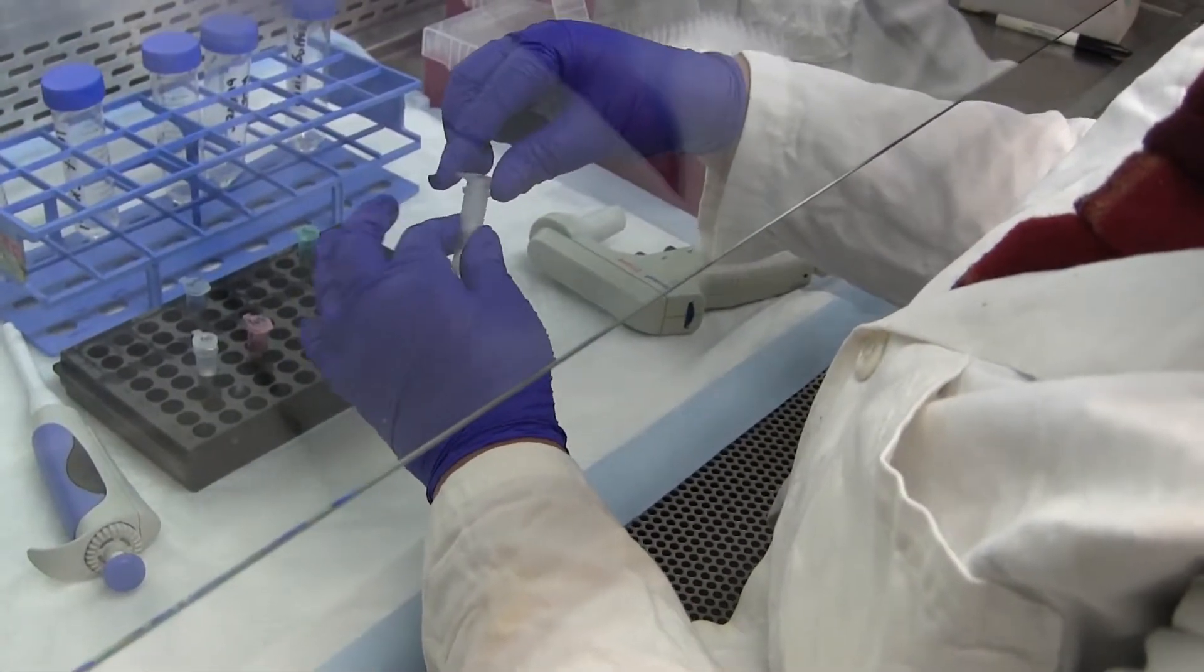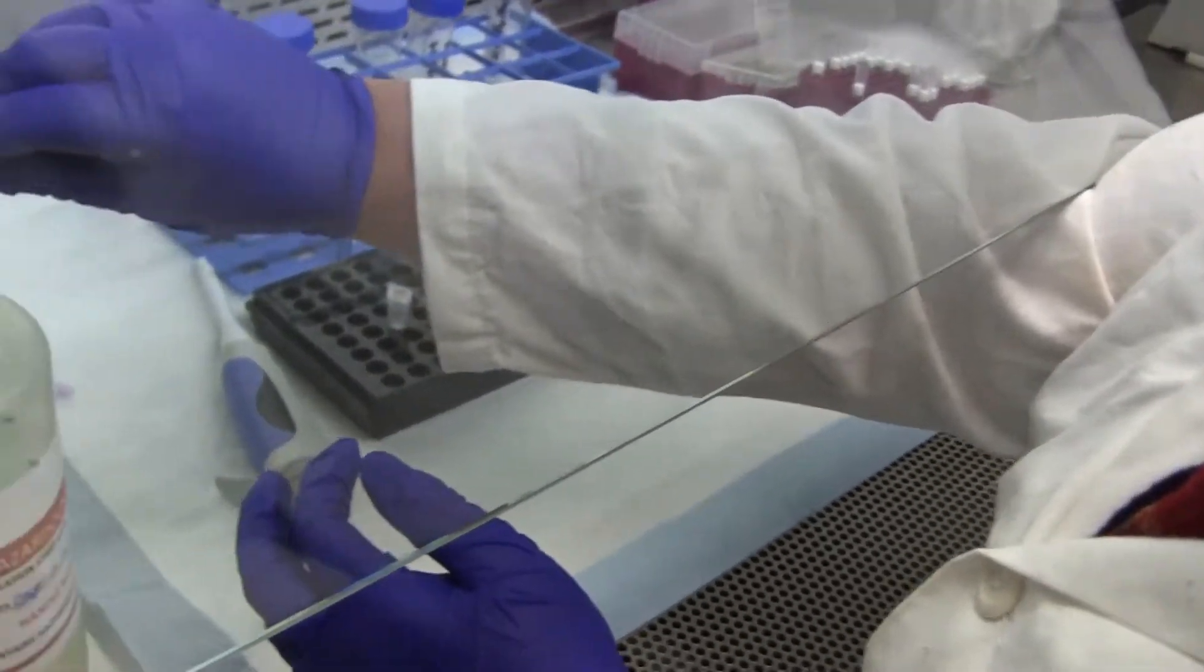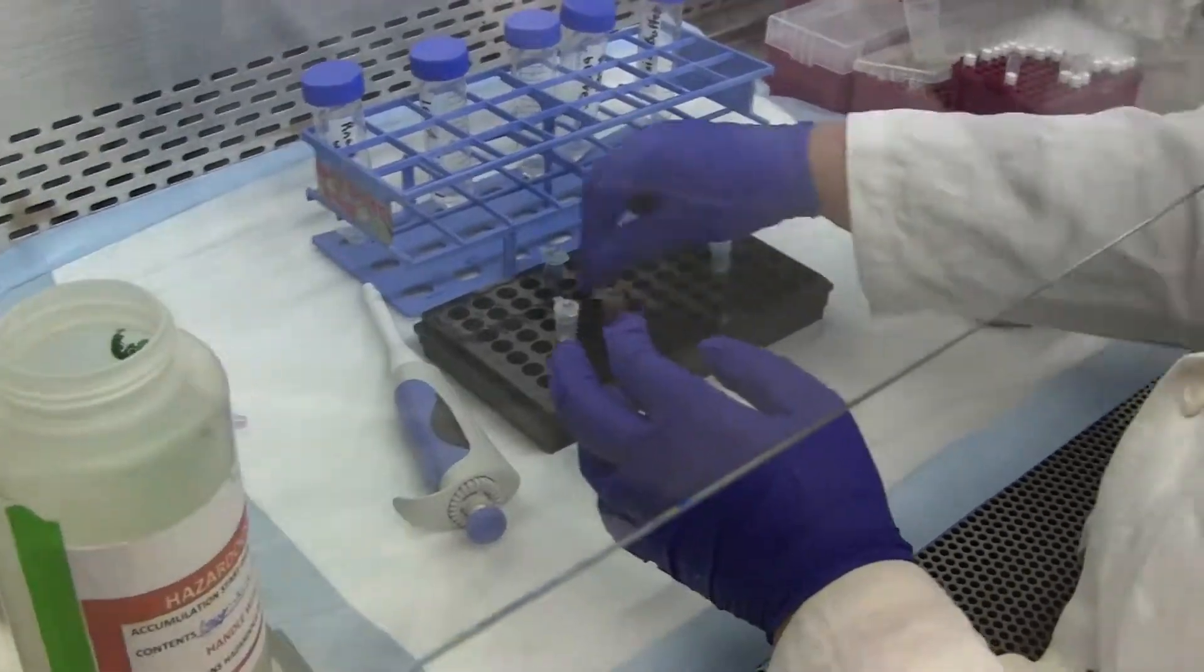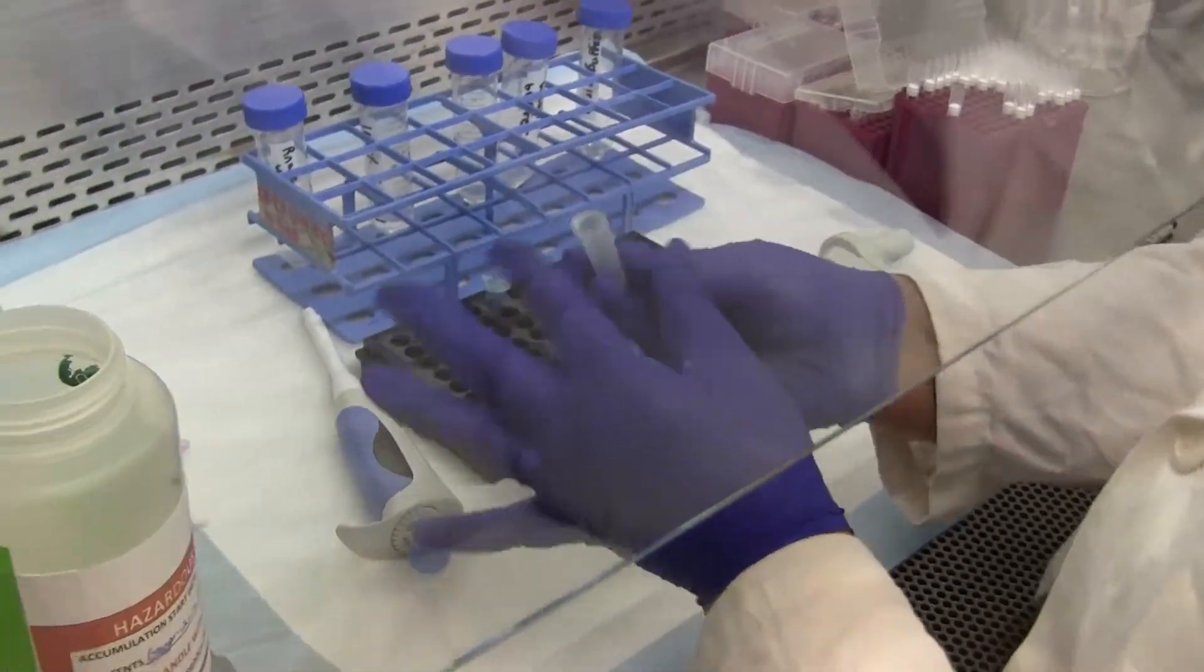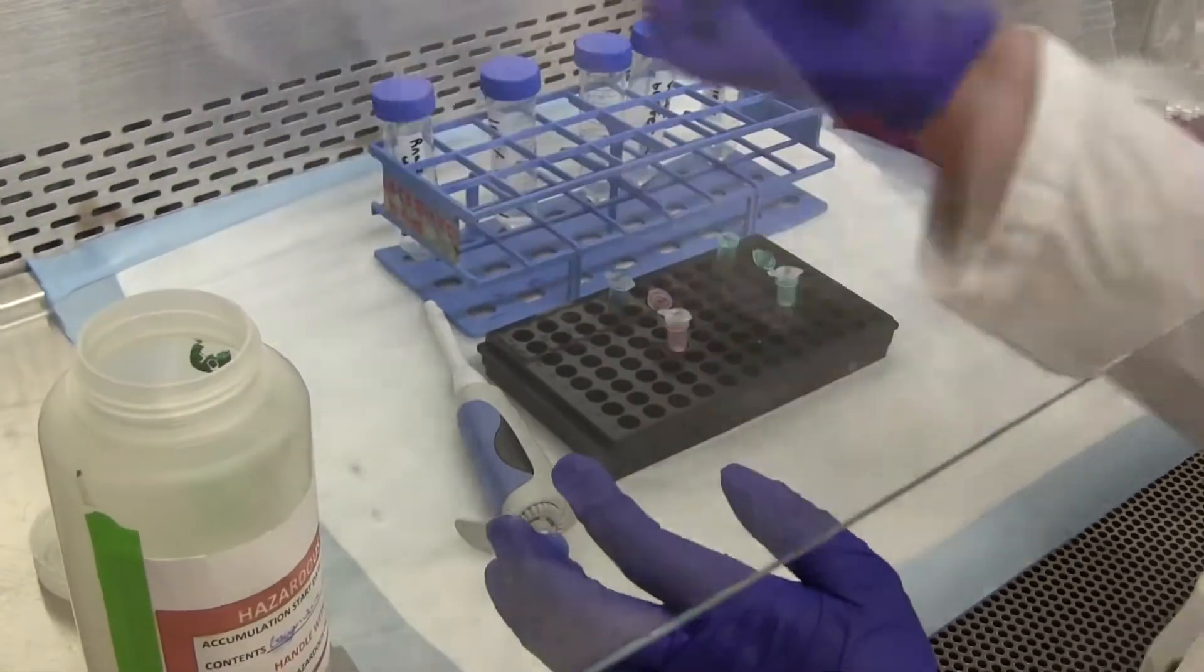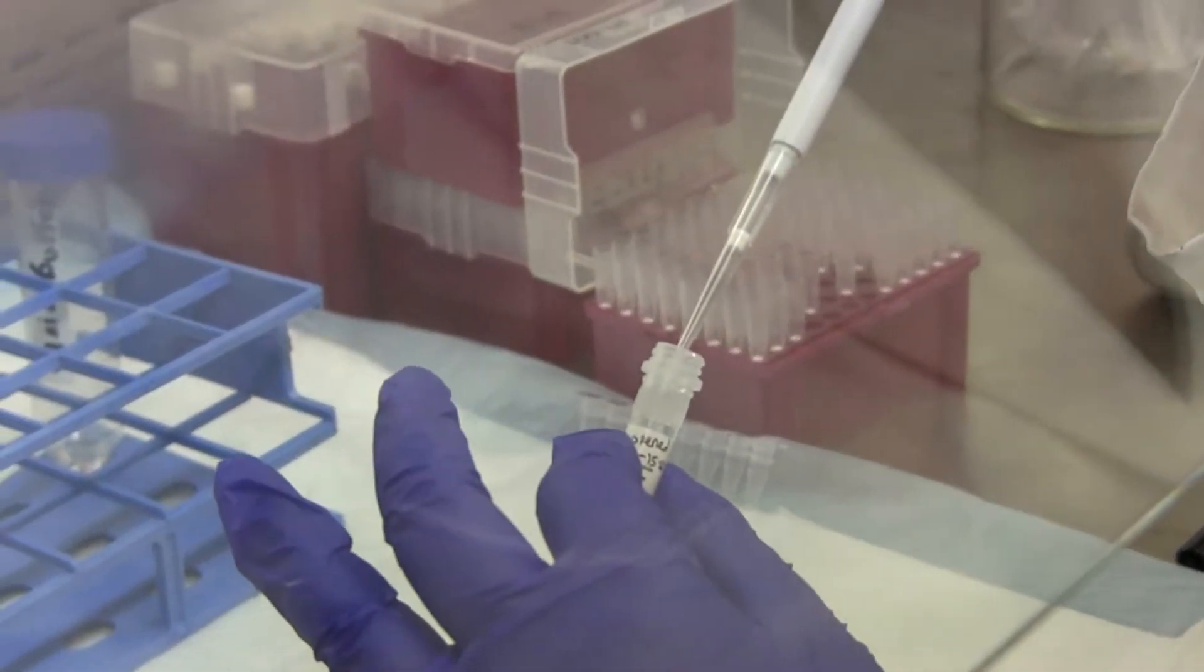And the final step, transfer the columns into fresh tubes. And now you see how the caps are open because the columns have their own caps. Now we're going to add, in this case it's just 25 microliters of the TE buffer. And for the Qiagen kit, we're using the AVE buffer that it comes with.